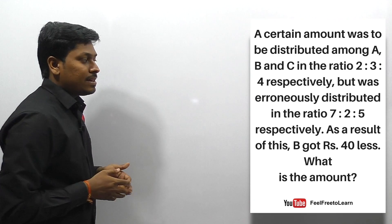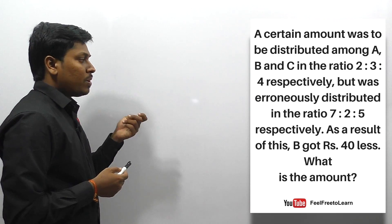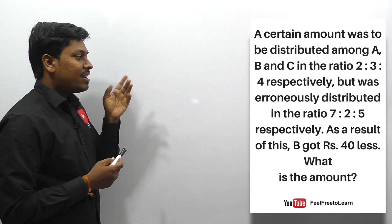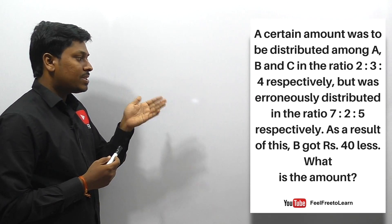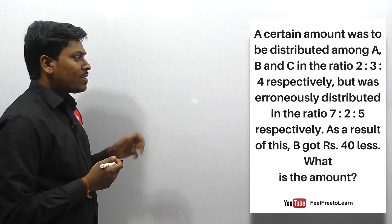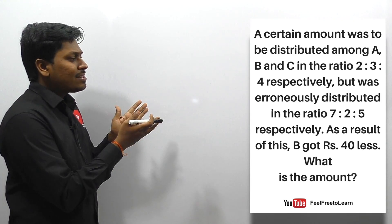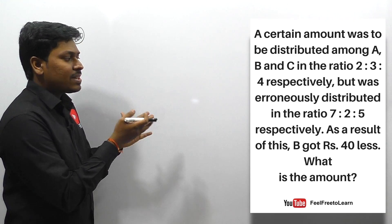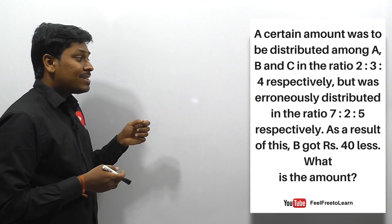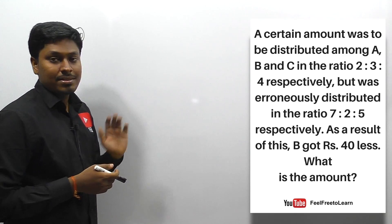The last question in set number 4, question 20: a certain amount was distributed among A, B, C in a ratio 2:3:4, but was wrongly distributed in a ratio 7:2:5. As a result, B got 40 rupees less. What is the amount?